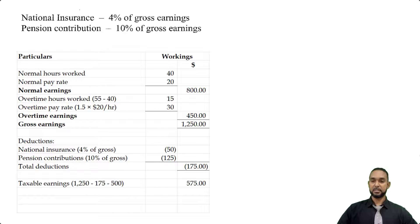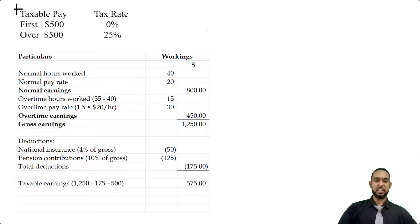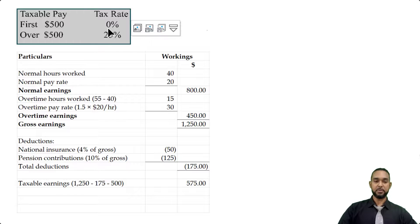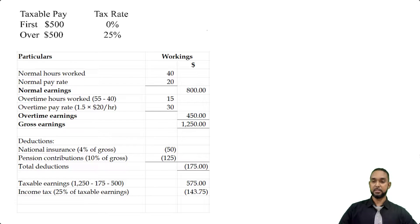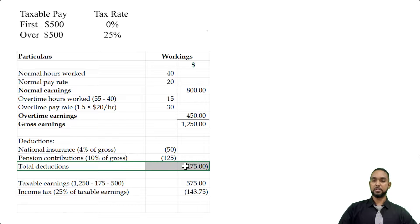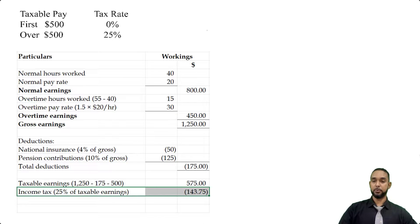Now we have to find taxable earnings, which comes to $575. How do we get that? We take the gross earnings of $1,250, subtract the deductions of $175, and also subtract $500 — because the first $500 of pay is taxed at 0%. The remainder of the income is taxed at 25%, so we find 25% of the taxable earnings of $575, which gives us $143.75 income tax.